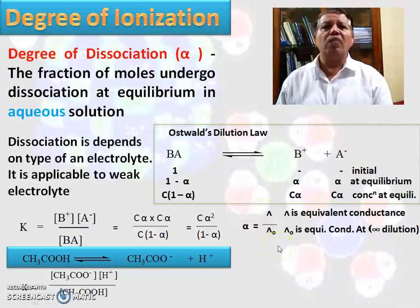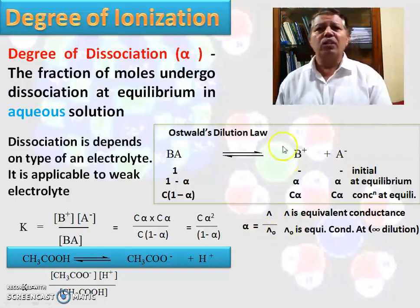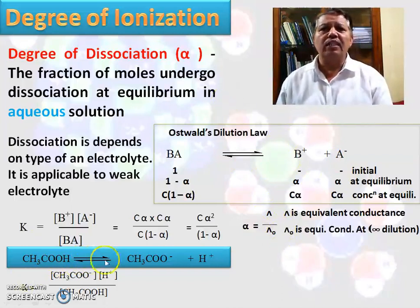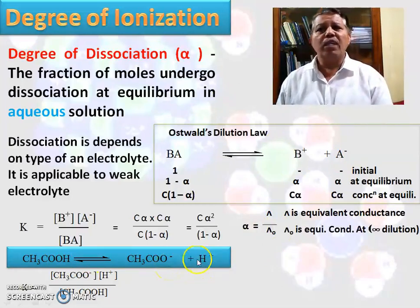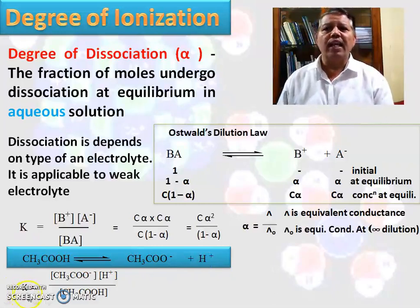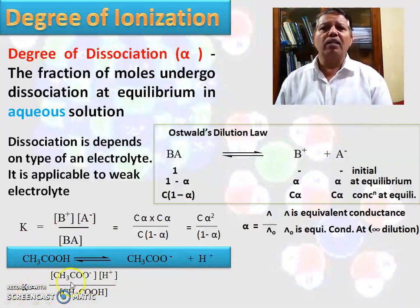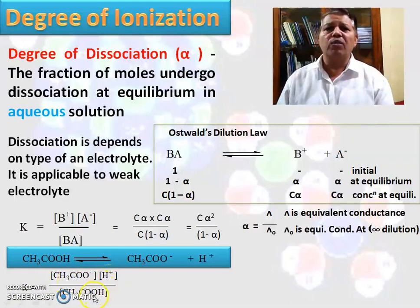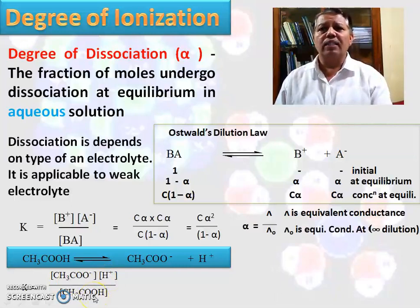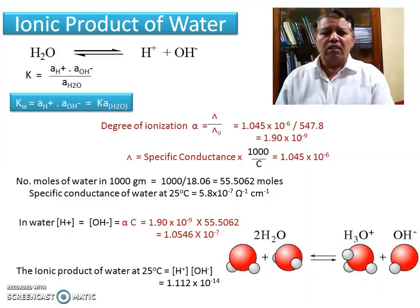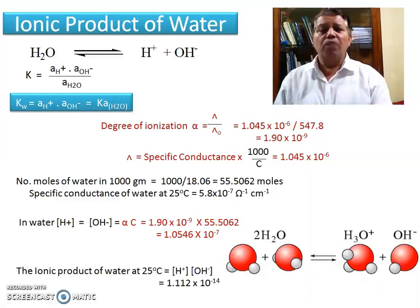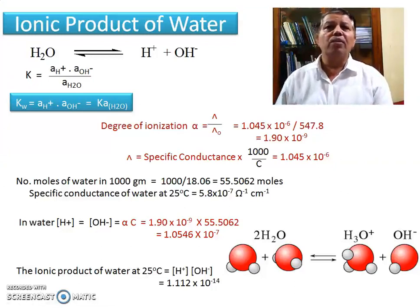From this equation, we can measure alpha using a conductometer. In case of a weak acid, suppose acetic acid dissociates into acetate ion plus hydrogen ion. The equilibrium constant for the acid, Ka, equals the concentration of acetate ion times the concentration of hydrogen ion divided by the concentration of acetic acid. From the degree of dissociation, we can also measure the ionic product of water.